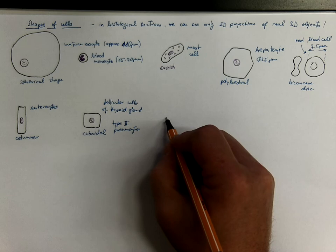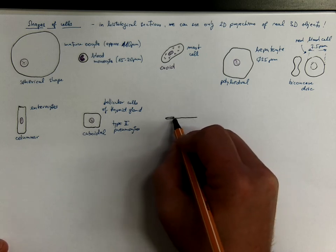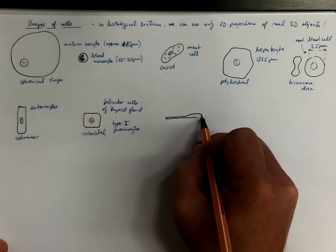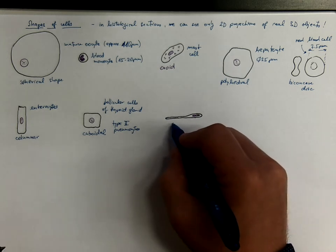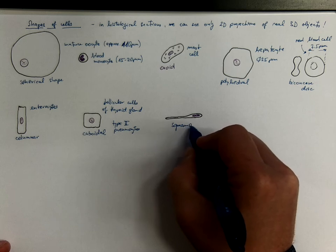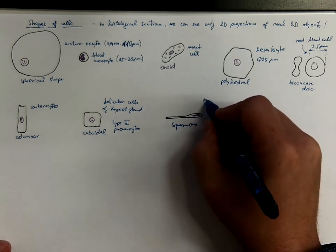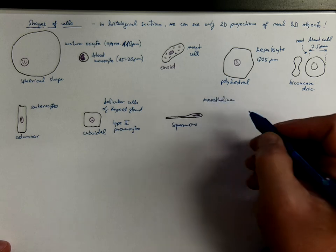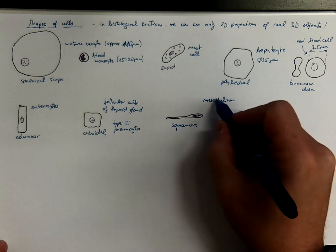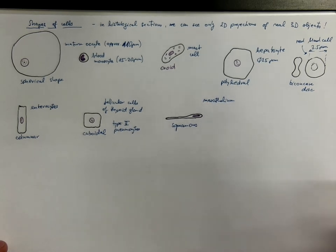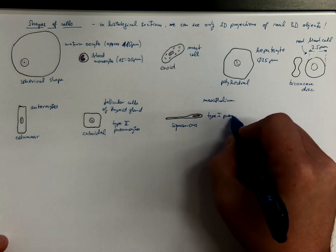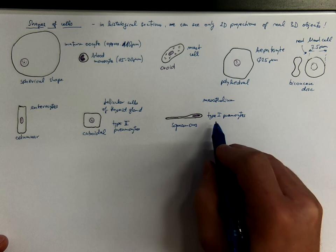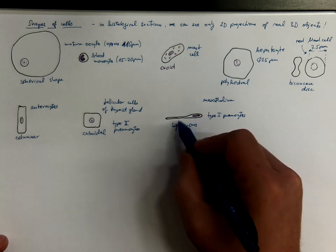Another shape would be flat or squamous. These cells could be so flat that the only region that is well visible in routine sections in optical microscope would be the region with the nucleus, which is bulging here. So that's squamous. A good example would be mesothelium, that's the epithelium lining, for example, the abdominal cavity, or type 1 pneumocytes aligning the lung alveoli. We are literally breathing through these cells.